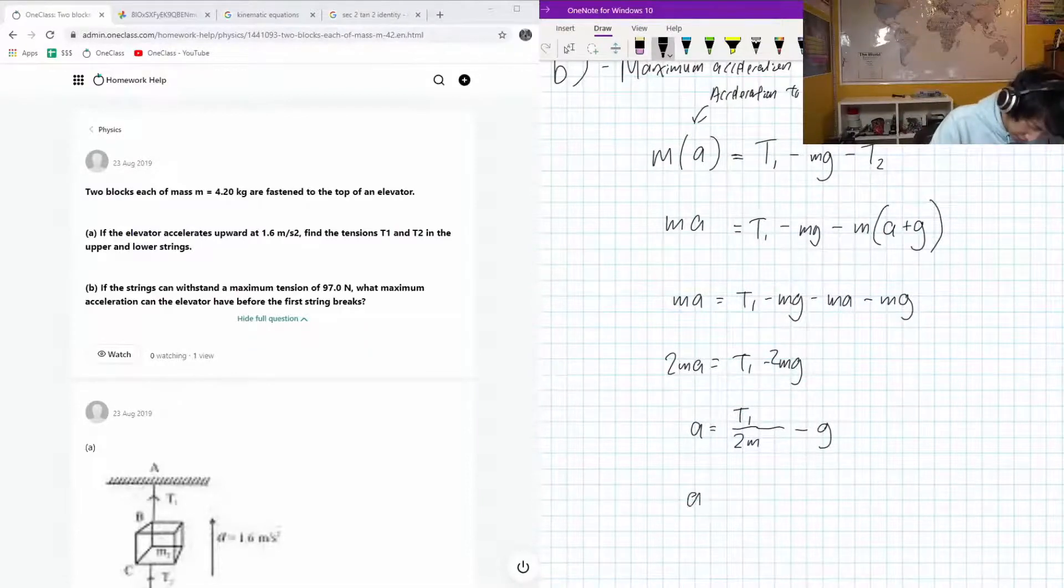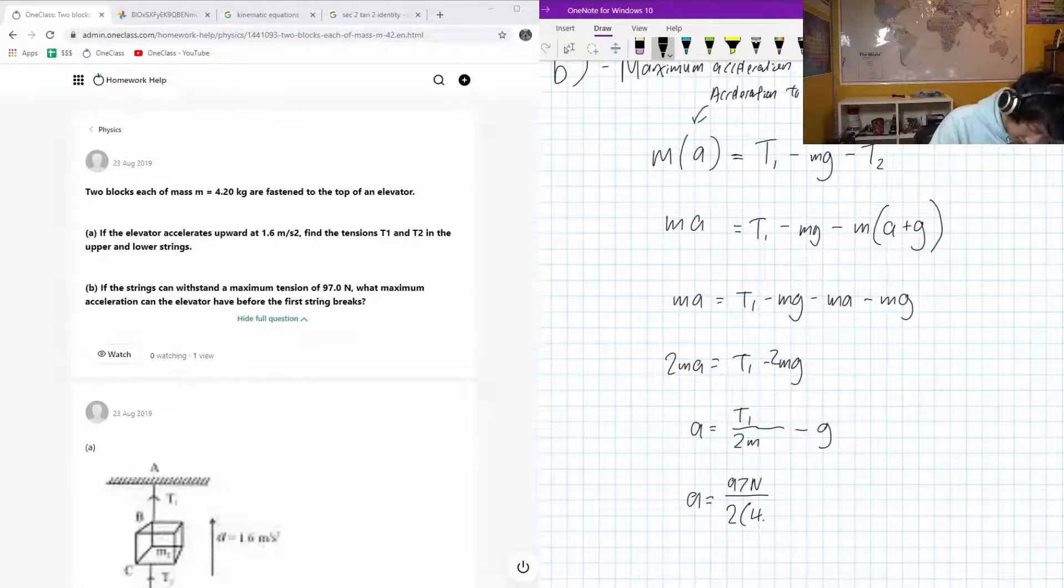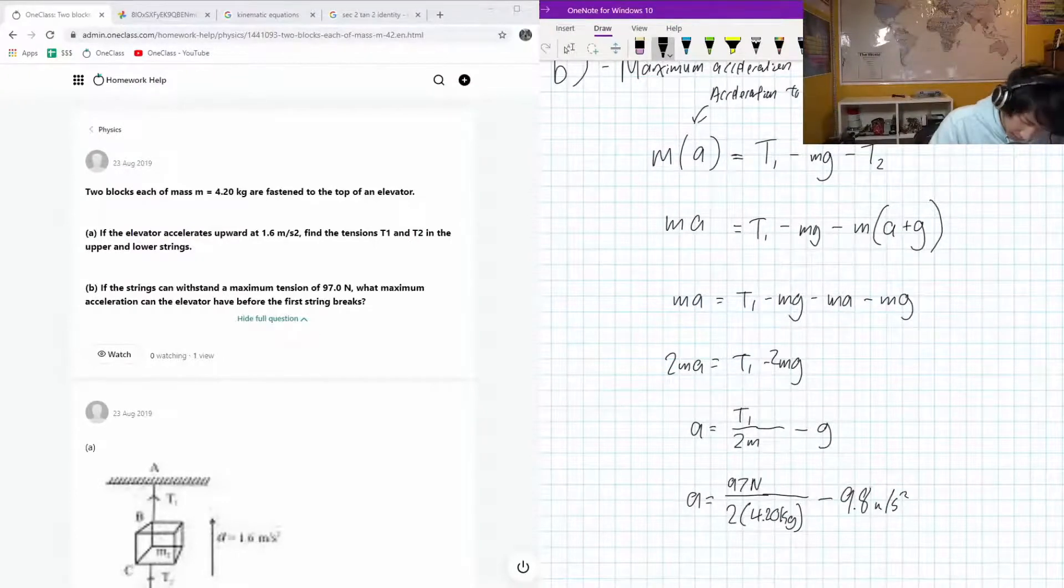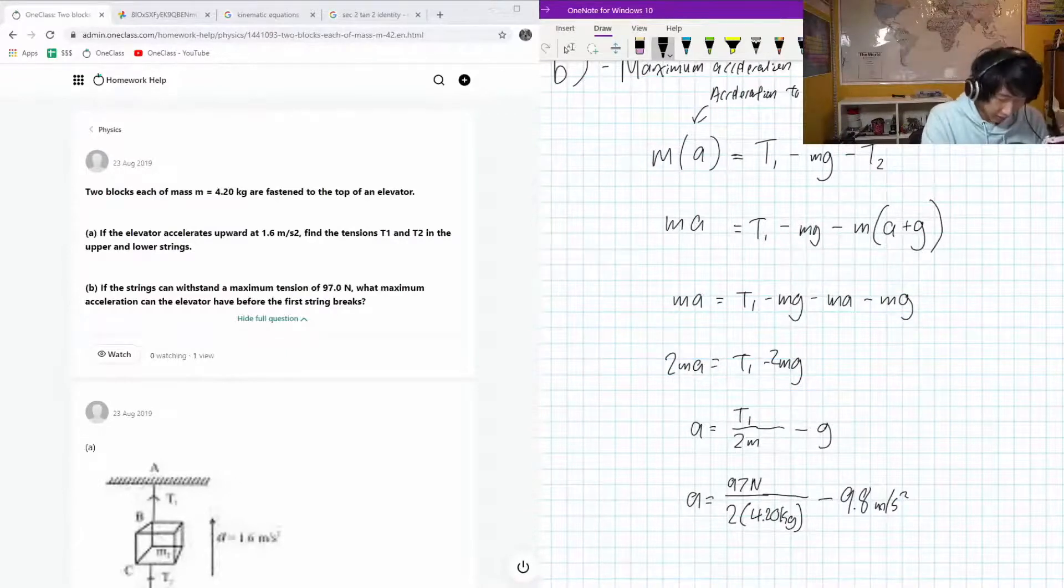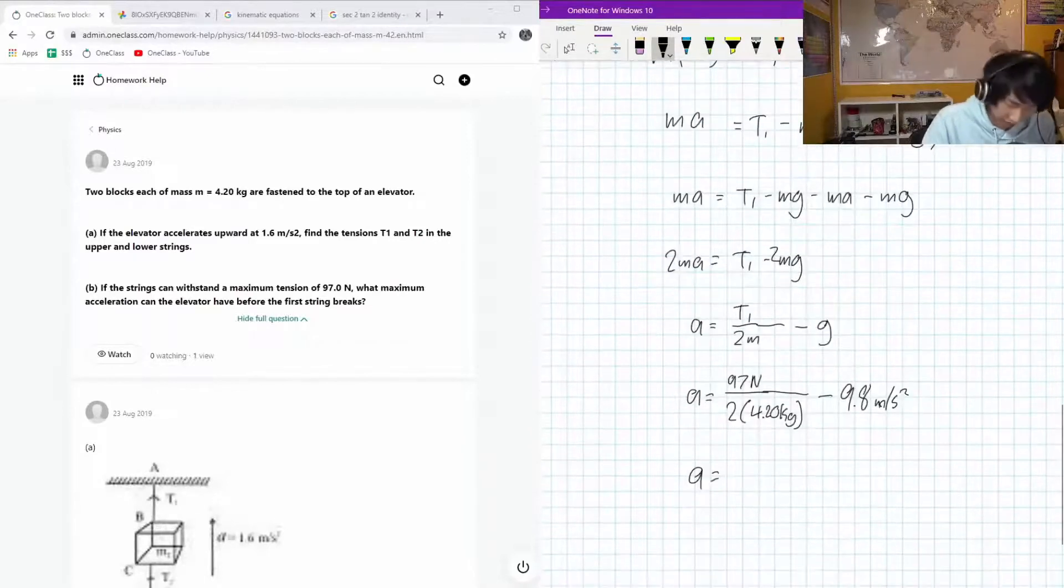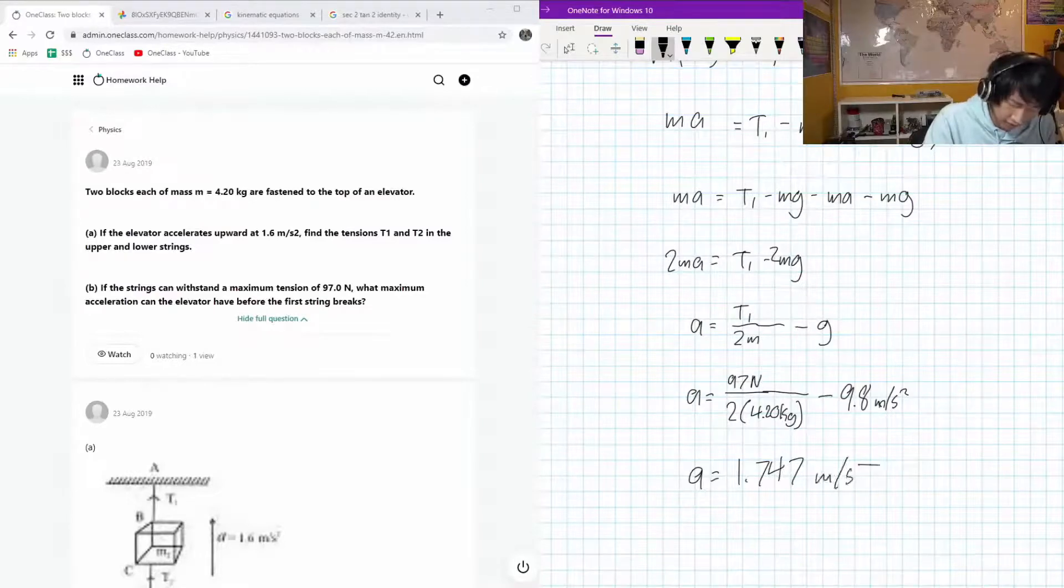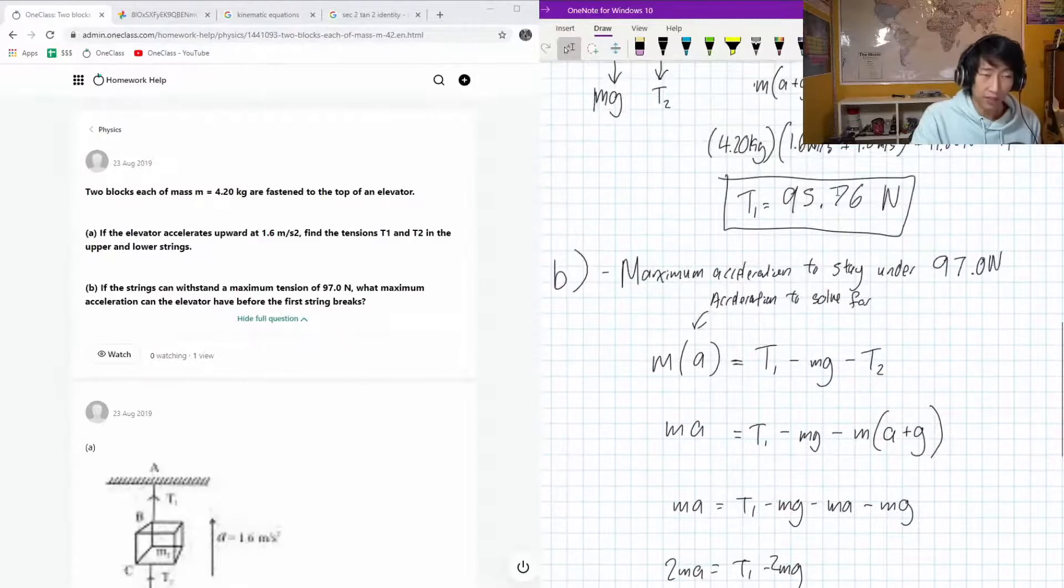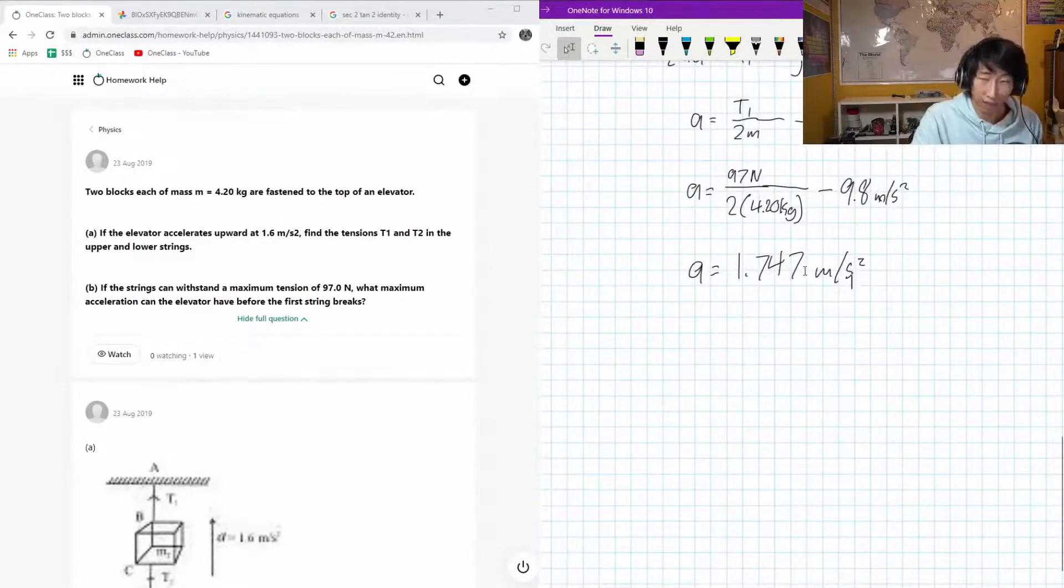So subbing in all of our numbers, we're going to get a is equal to the top tension, that's going to be 97 newtons, divided by 2 times the mass, 4.20 kilograms, minus 9.8 meters per second squared. Okay, let's figure this out. 97 divided by 2 times 4.2, that whole thing minus 9.8. And a is, my calculation for that is 1.747 meters per second squared. Slightly higher than what we did before, but that makes sense because our tension limit is slightly more than our previous acceleration.